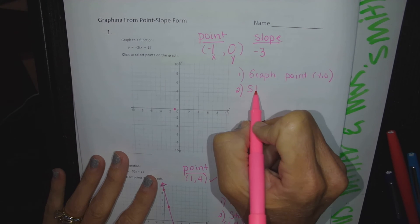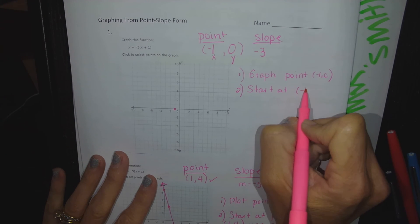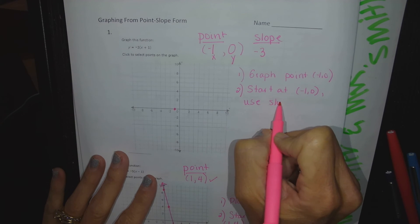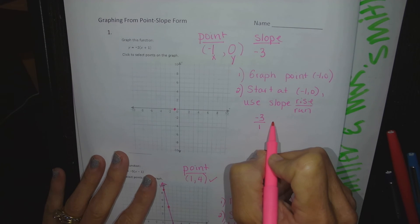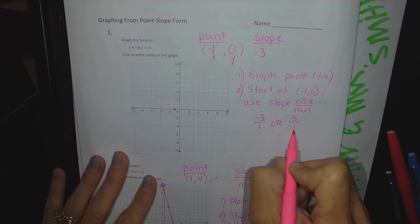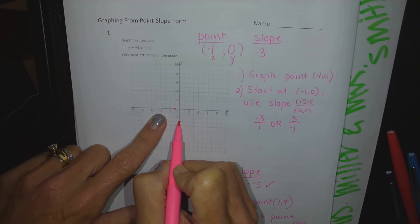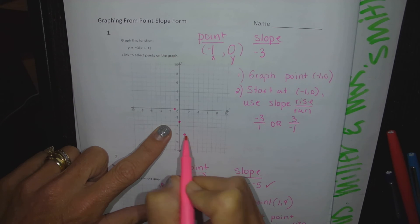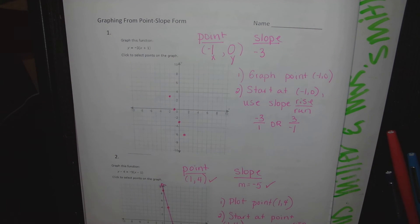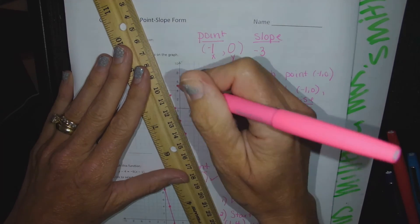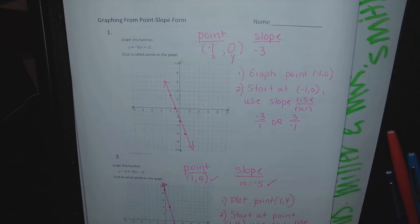All right, step one: graph the point (-1, 0). And you're there. Step two: start at (-1, 0) and use your slope, rise over run. Our slope is negative three over one, or three over negative one. So I'm going to go down three to the right one. Down three to the right one. I'm going to go back to my point and go up three to the left, and I'll stop there. Very similar looking line.